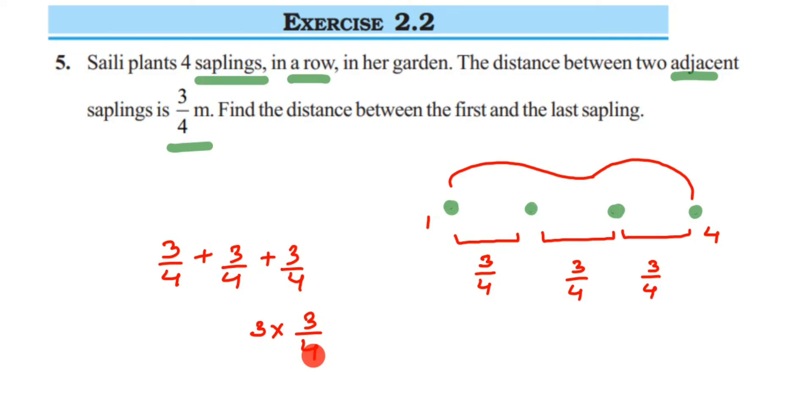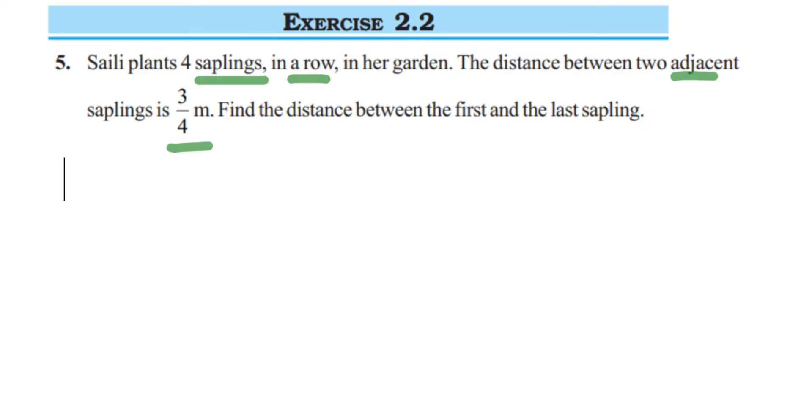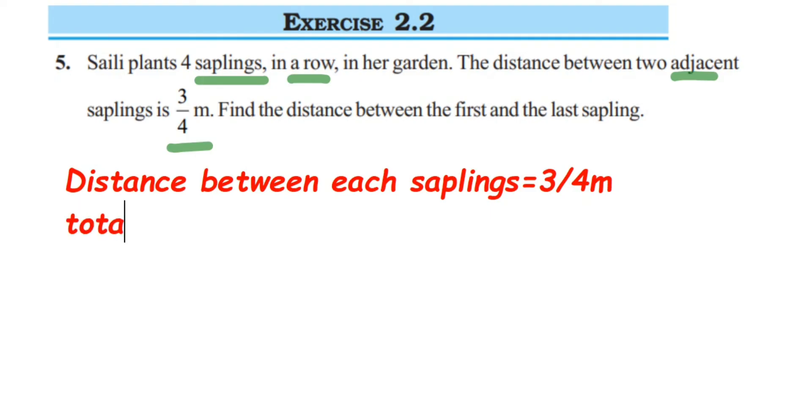Now, let's write down what we know from the question here. Distance between each sapling or the adjacent sapling is equal to 3 by 4 meter. Next, they have also given they have 4 saplings. So total number of saplings is equal to 4.